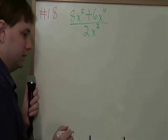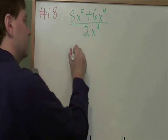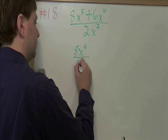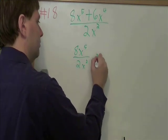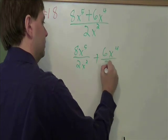One trick for fractions is that anytime you have a plus or minus in the middle, you can just split it up into two separate fractions. This is the same as this piece over 2x squared plus this piece over its own 2x squared.